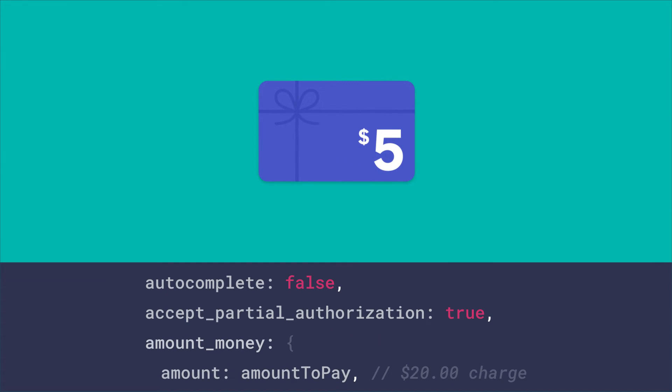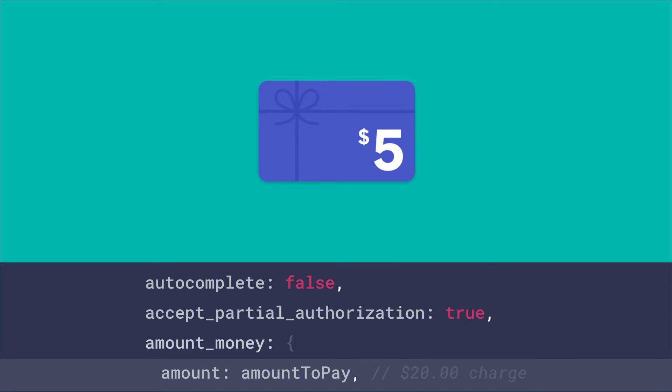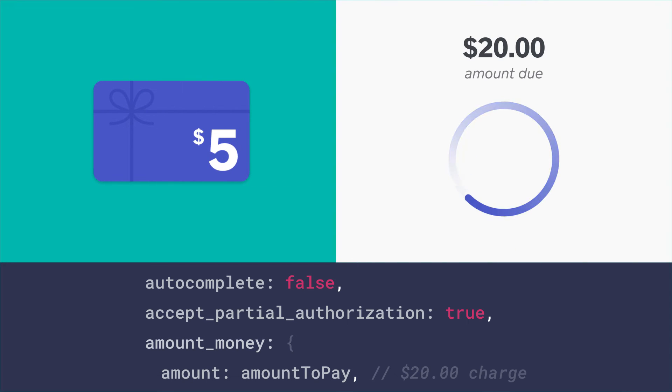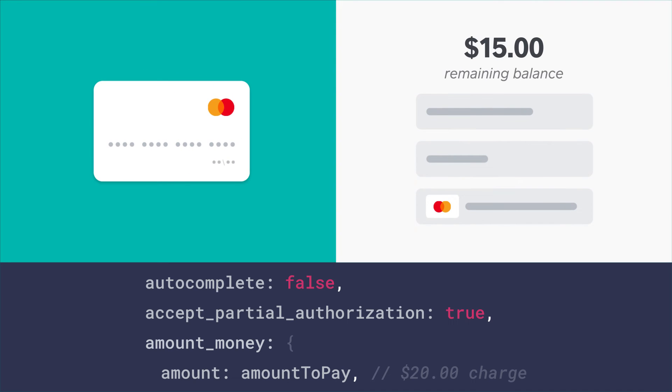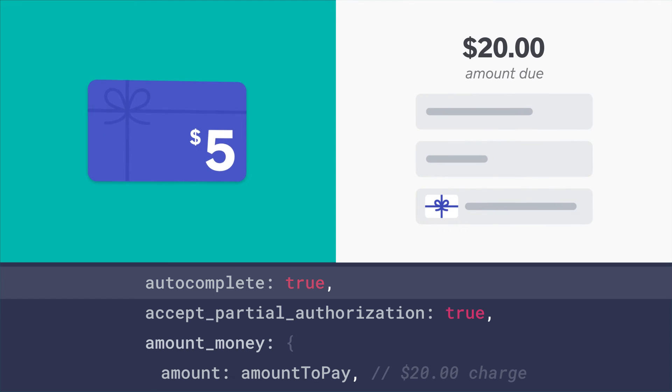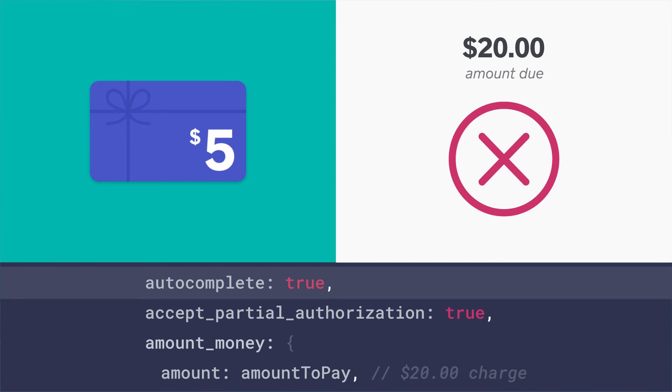For example, suppose we have a Square gift card with $5 on it. I make a request with autocomplete set to false, accept_partial_authorization set to true, and amount money set to $20. Square will return back an amount money of just $5 in the payment response, since that is all the gift card had on it, even though we requested to authorize $20. If we were to set autocomplete to true, the request would actually fail. In this case, it's now up to you, the application developer, to compare amount money in the response with amount money specified in the request. If the amount is less, your application should prompt the buyer for an additional payment to cover the remainder, or void the gift card payment you authorized.